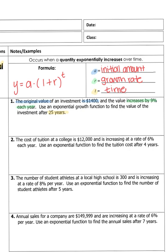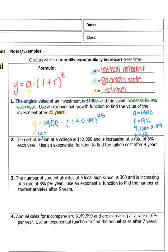Now we plug everything in: y equals $1,400 times 1 plus r. We can't do math with percents, so we convert 9% to a decimal: 9 divided by 100 equals 0.09. So r is 0.09 and t is 25. In the calculator, type 1400 times parenthesis 1 plus 0.09 parenthesis caret 25. You should get $12,072.31 — we use two decimal places since we're working with money.